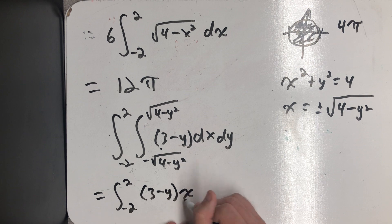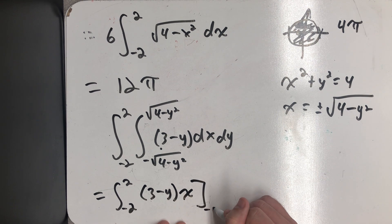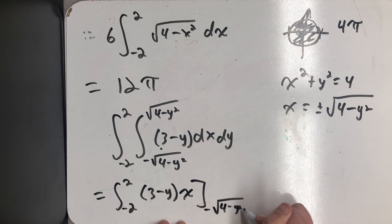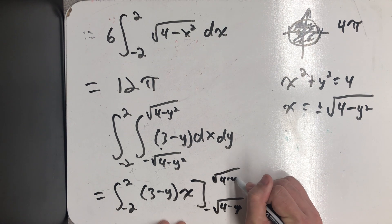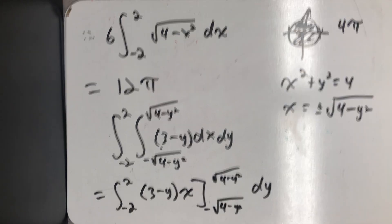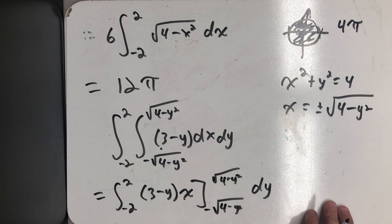But I'm just going to say that its antiderivative because it's a constant would just be 3 minus y times x. And I need to evaluate from minus square root of 4 minus y squared to positive square root of 4 minus y squared. And then I'll still be integrating with respect to y in a moment.